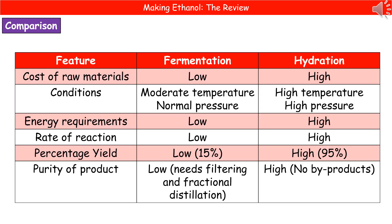One thing they could ask you to do is carry out a comparison between the two techniques to make ethanol and justify your choice for a particular process. Here is a table summarising key features of fermentation and hydration. The cost of raw materials is low in fermentation but high for hydration. The conditions for fermentation are moderate temperature and normal pressure, so limited costs, whereas hydration requires high temperature and high pressure, which is more costly. Energy requirements follow the same pattern — low for fermentation and high for hydration.